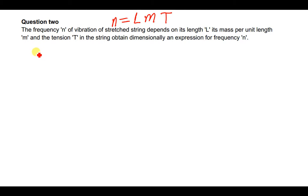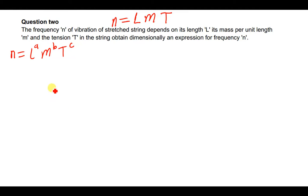Let's begin the calculations. Since frequency n depends on L, m, and T, we write n = L^a · m^b · T^c, where a, b, and c are unknown powers to be determined. We know that frequency n is the same as one over the period, so it can also be written as T to the power negative one.